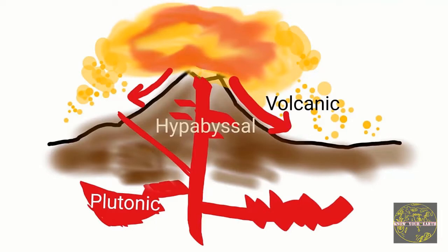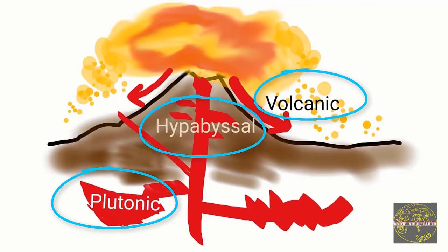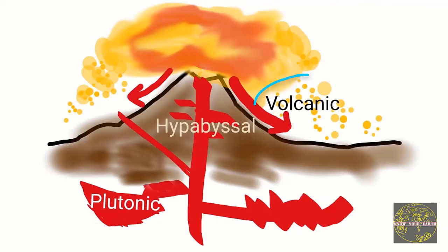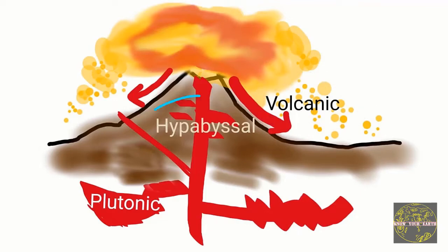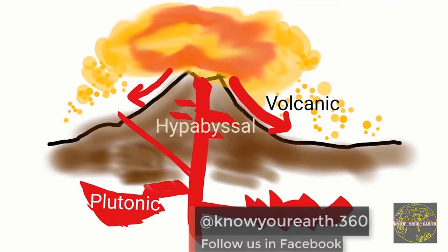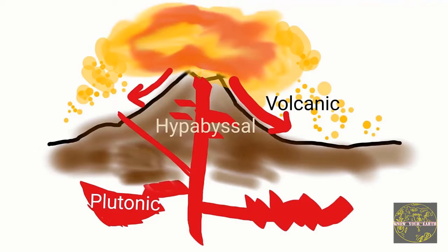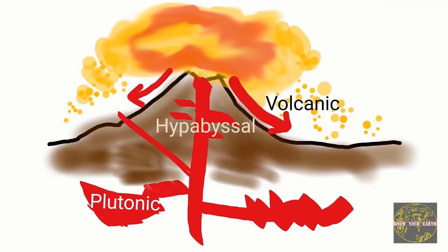The magma is generated at the mantle. This magma moves upward and during this upward movement the magma is emplaced at different depths, and accordingly they can be classified into three types. First is the volcanic rock, when magma reaches the earth's surface. Second is the hypabyssal rocks, when magma is emplaced at shallow depths of less than 1 km. The next is the plutonic rocks, which are deep-seated igneous rocks formed at depths greater than 1 km.